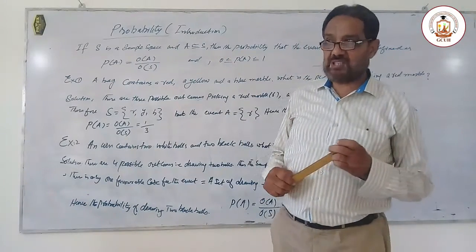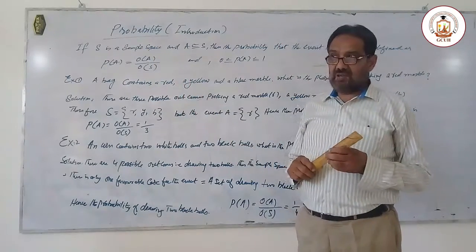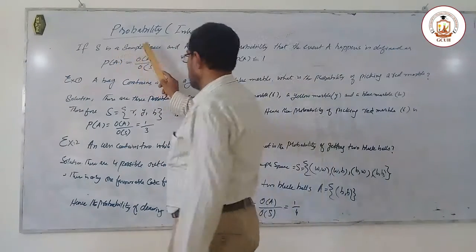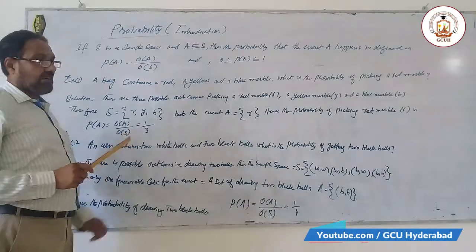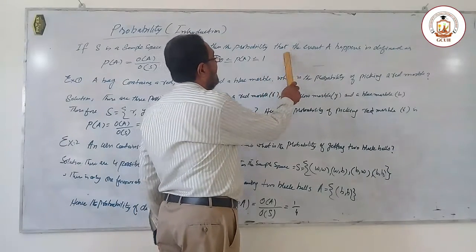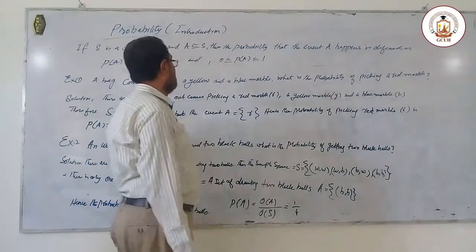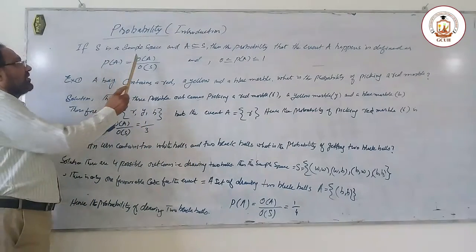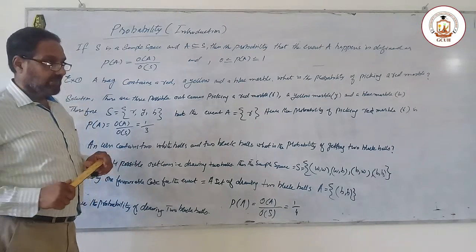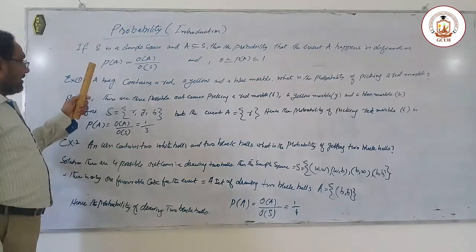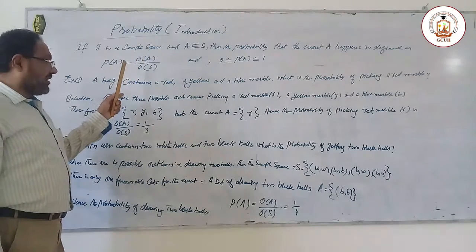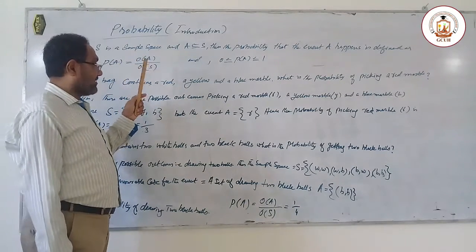This is called a sample space. S is all possible outcomes of any event. S represents the total outcomes. If A is a subset of S, then the probability of event A is defined as: probability of A is equal to the order of A divided by the order of S — that is, the number of elements in A divided by the number of elements in the sample space S.